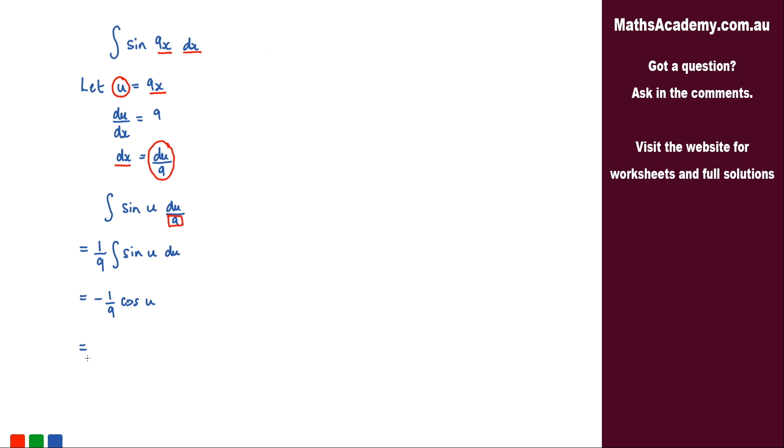Now we know that u, well from up here, we know that u here is actually 9x. So I can substitute that back in. So I've got negative 1 over 9 cosine of 9x, and I just need to add on the constant of integration.